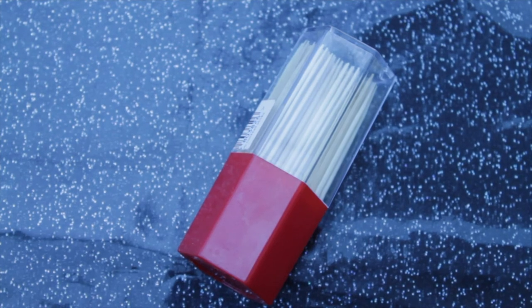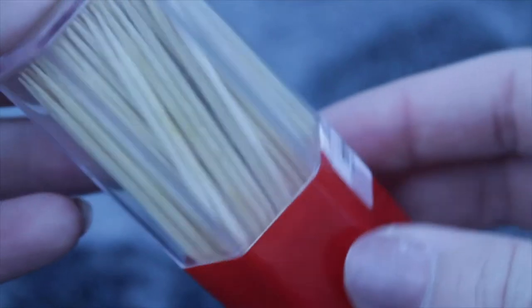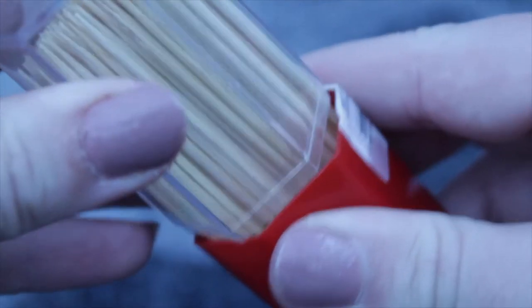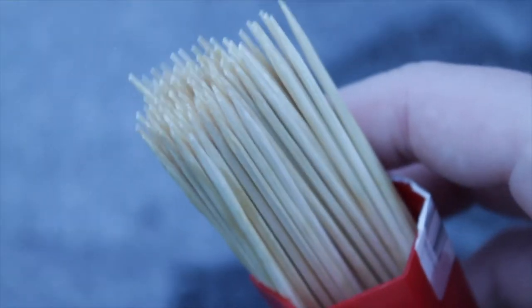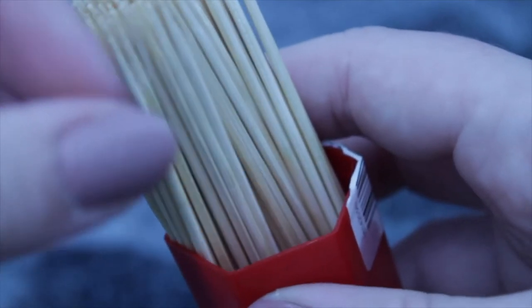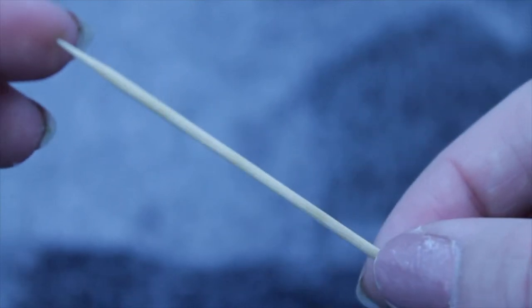One of the pros of wooden cocktail sticks over say a scribe are that they're readily available anywhere. You can get them in most supermarkets or even craft stores if you need to. Other benefits include that you get so many in a pack and also they're disposable so you don't need to clean them after each use like you would a scribe.